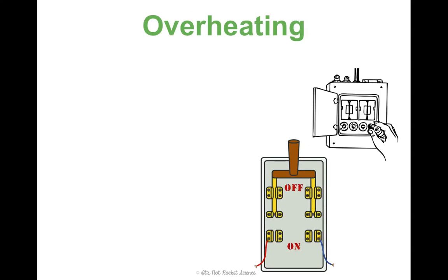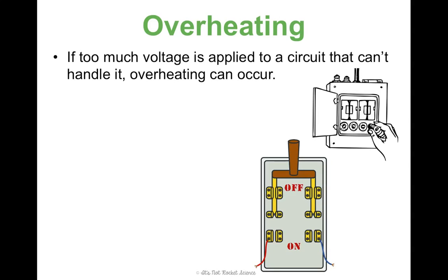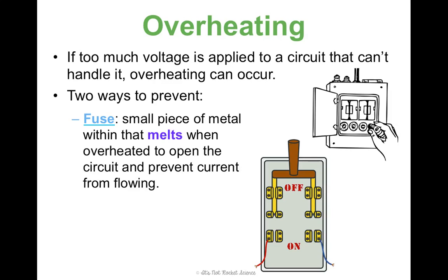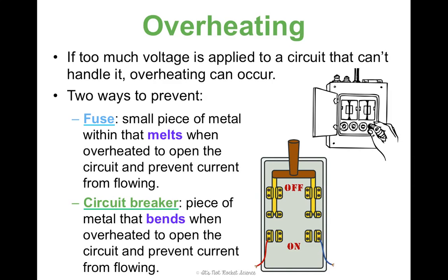This is the last thing for CP students: overheating. How do we prevent it? If there's too much voltage — if that difference is too great and the current's flowing too much and a circuit can't handle it — overheating can occur. There are two ways we prevent this: fuses and circuit breakers. A fuse is a small piece of metal that melts when overheated, allowing the switch to open. So the circuit is no longer closed, and current can no longer flow. A circuit breaker is the same idea, except the piece of metal just bends when overheated — that opens the circuit, prevents current from flowing, and you'd have to reset it to get current flowing again. That is all that CP students need to know — honors students, stay with me, we're going to learn a little bit more math.